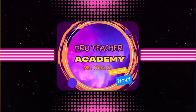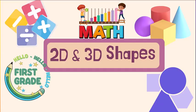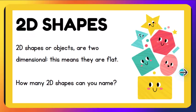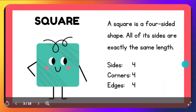Hey everyone, welcome to ProTeacher Academy, and today our topic is 2D and 3D shapes. Let's start. 2D shapes or objects are two-dimensional shapes, which means they are flat. How many 2D shapes can you name?